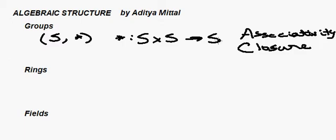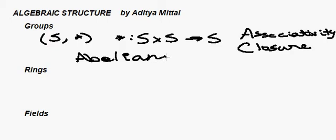Going back to the integers, we have a more specific kind of group called an Abelian group. An Abelian group is a group in which the order of operations doesn't matter. For example, if you take two numbers and add them, it doesn't matter which way you add them — two plus five or five plus two, you'll get seven either way. An example of an Abelian group would be the integers under addition, because you can reverse the order and apply the operator.